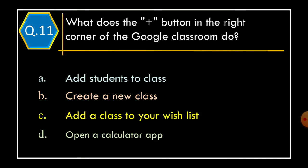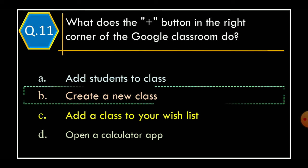Question 11: What does the plus button in the right corner of the Google Classroom do? Option A: Add student to class, Option B: Create a new class, Option C: Add a class to your wish list, Option D: Open a calculator app. And correct option is Option B: Create a new class.